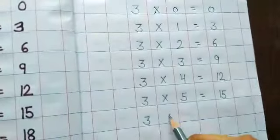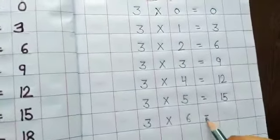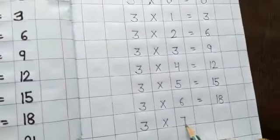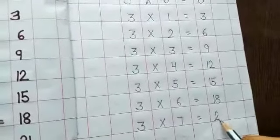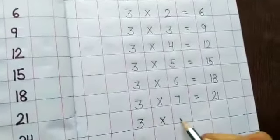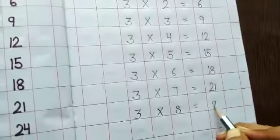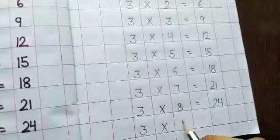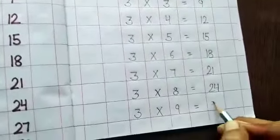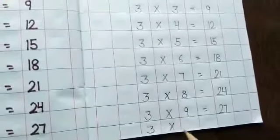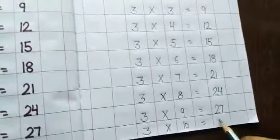Three sixes are eighteen. Three sevens are twenty-one. Three eights are twenty-four. Three nines are twenty-seven. Three tens are thirty.